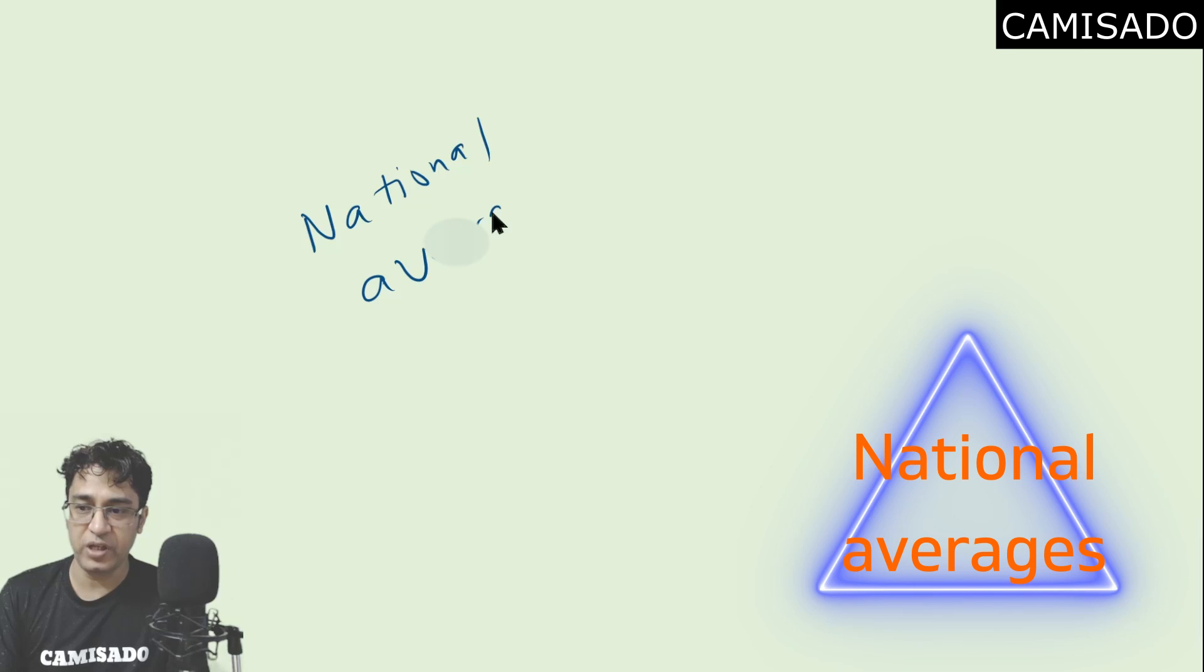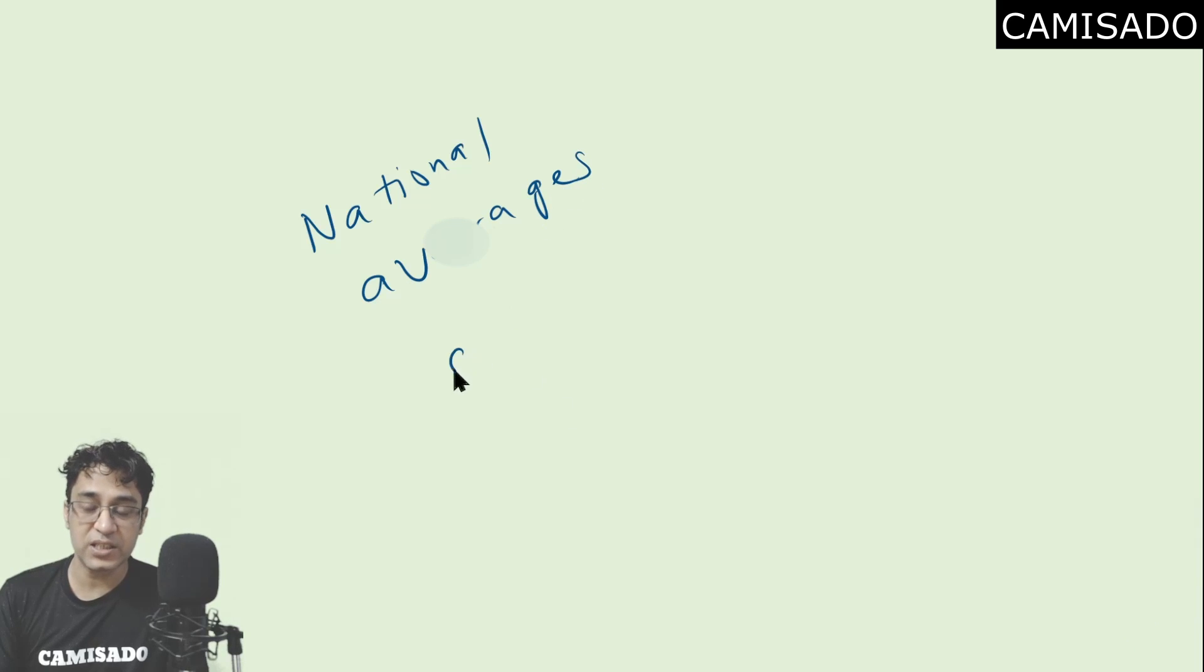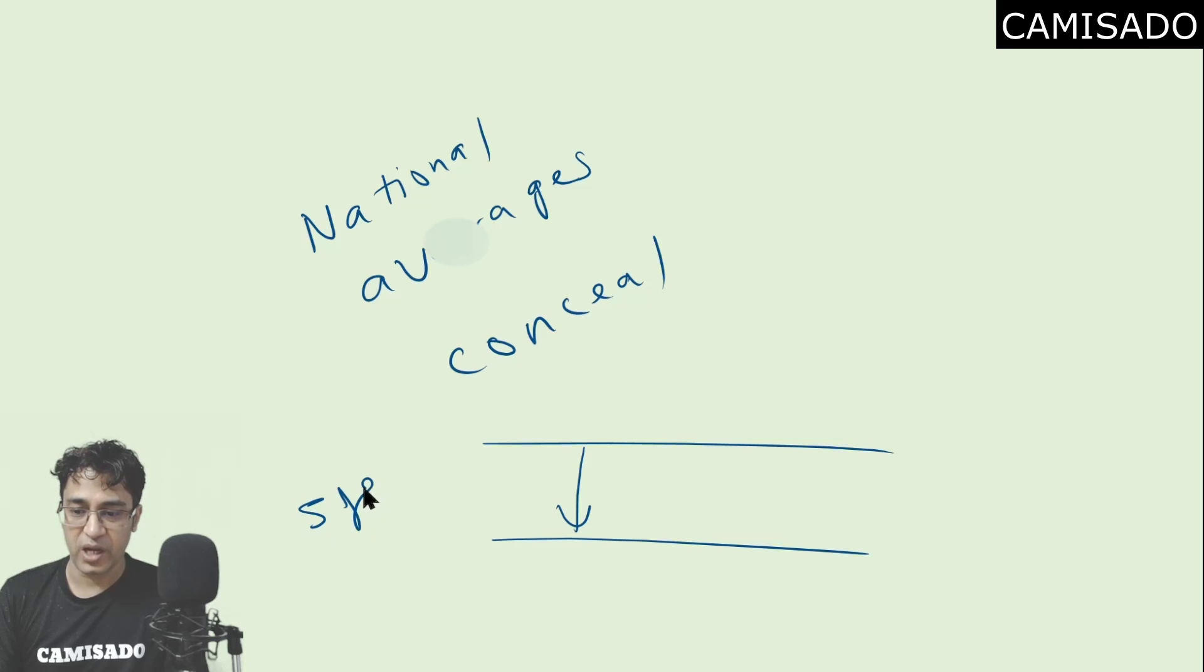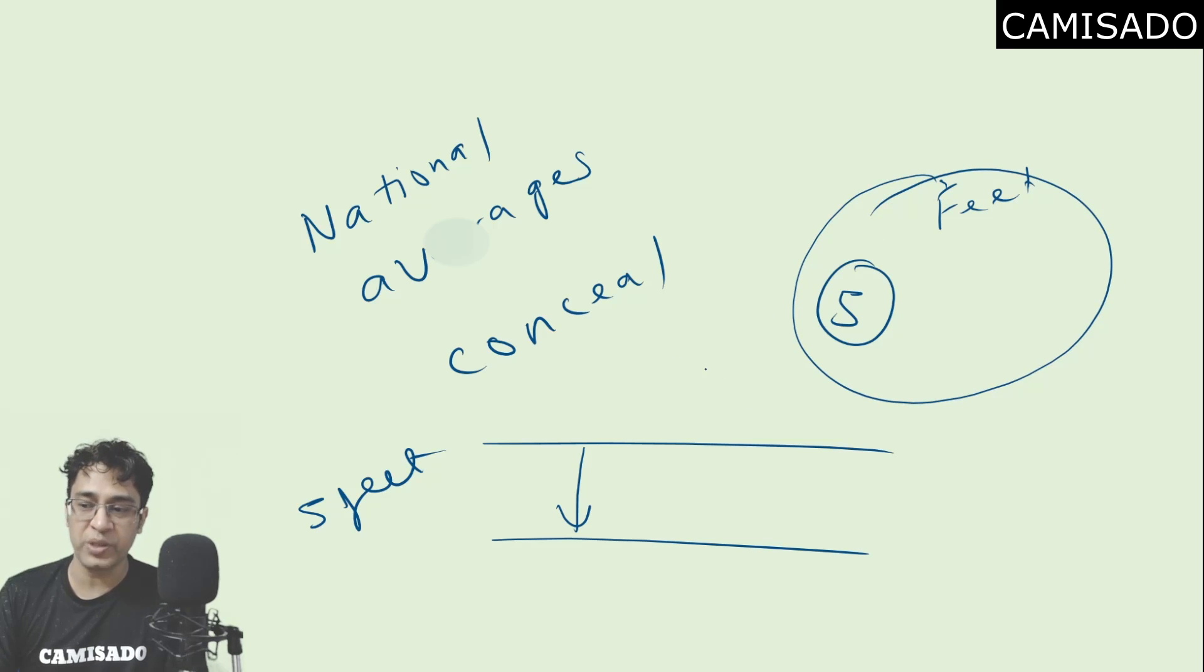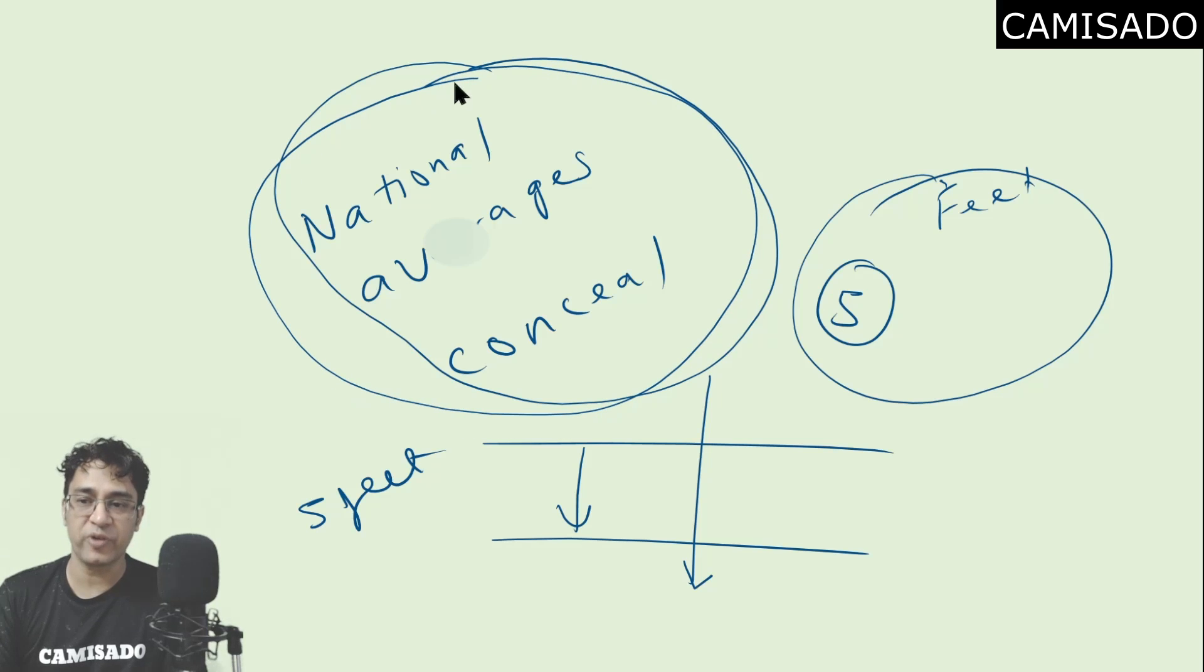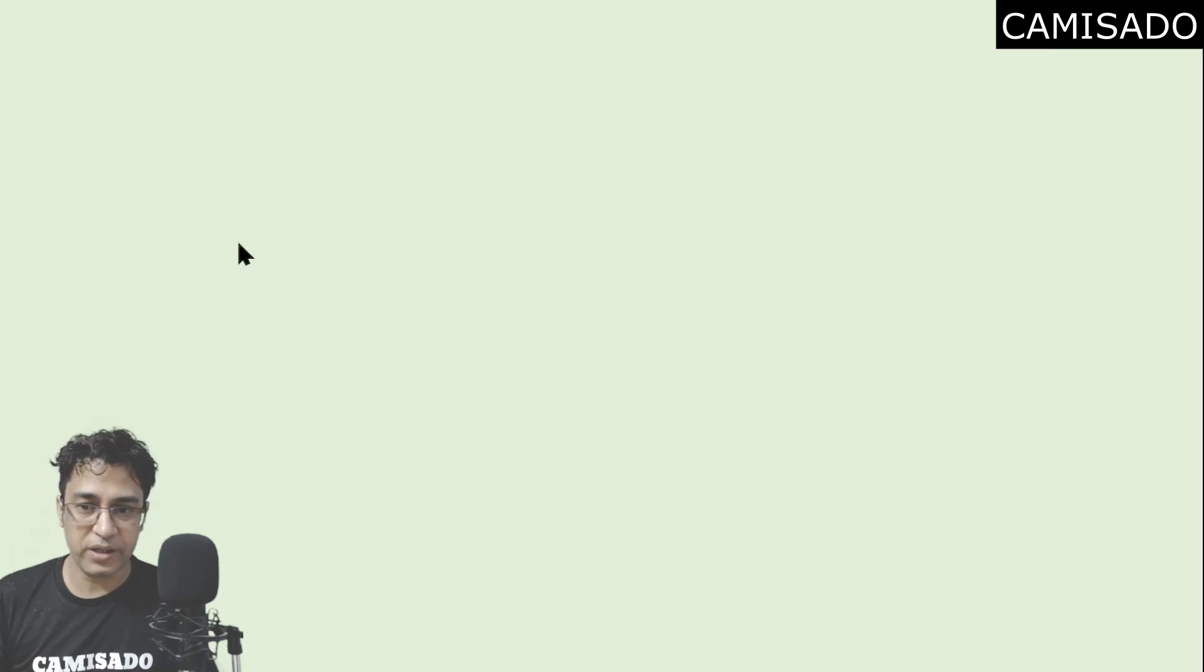We all know that averages can conceal a lot of things. For example if there is a river with a depth of 5 feet and if there are let's say 5 friends whose average height is 5 feet, in this situation some friends would be taller than 5 feet some would be shorter than 5 feet. So if their average height is 5 feet it does not mean that all will successfully cross the river. Therefore the use of national averages is not a very good idea in a model and this can also be one of the criticisms of the model.